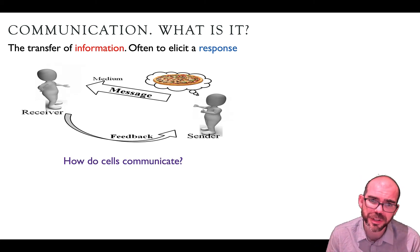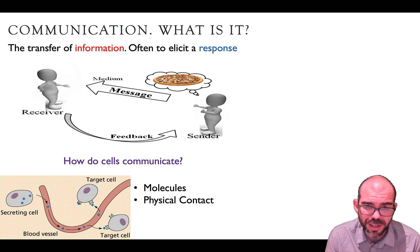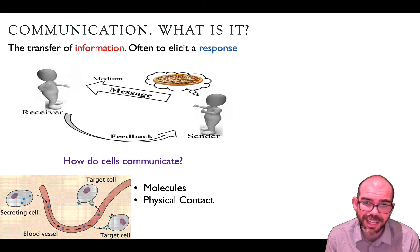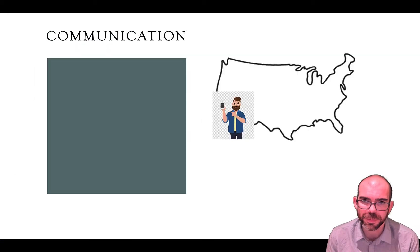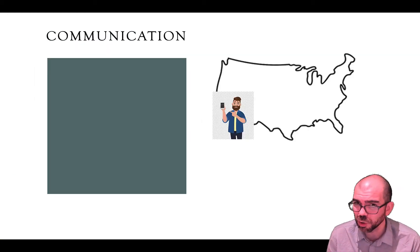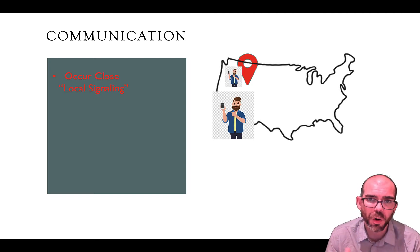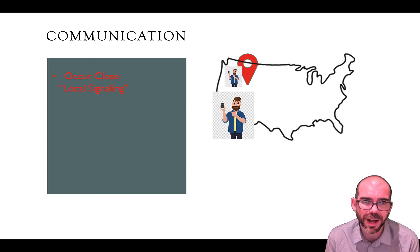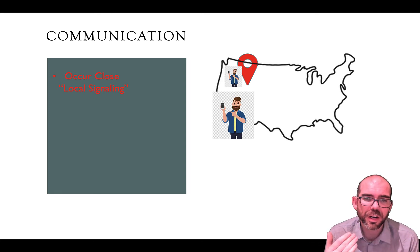So how are cells going to do this? To communicate, cells don't use sound waves or digital information. Instead, they're going to use molecules or physical contact to transfer information and elicit a response from each other. Communication can occur over close or large distances. For the purposes of cells, we're going to call close communication local signaling.